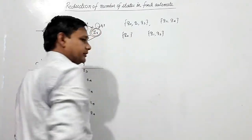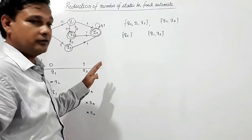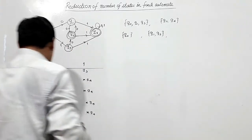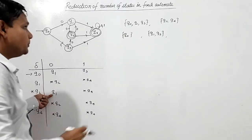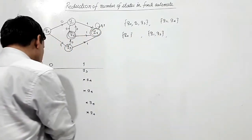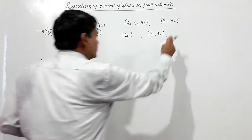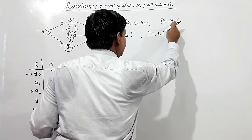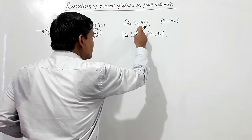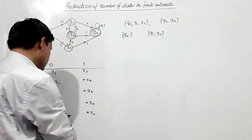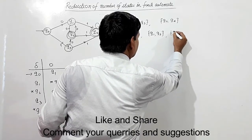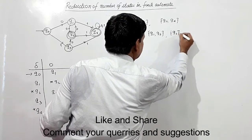So Q0 will remain as a single state. Now checking Q2 and Q4: Q2 on 0 is going to Q1 which is in the non-final set, but Q4 on 0 is going to Q4 which is in the final set. Since Q2 and Q4 go to different sets on input 0, we will segregate Q2 and Q4 into separate states.